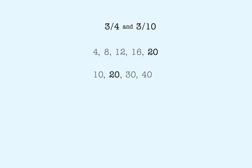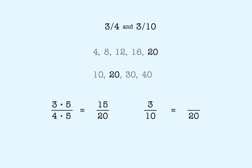We now can rewrite the fractions with a common denominator of twenty. Three-fourths becomes fifteen-twentieths, and three-tenths becomes six-twentieths.